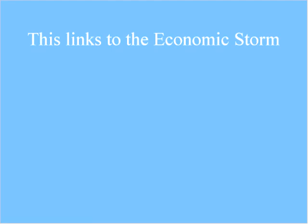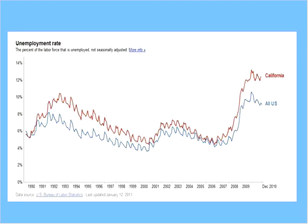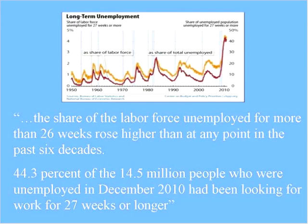I want to talk about the economic storm we are facing. This graph from the U.S. Bureau of Labor Statistics shows the blue line is unemployment. The spike we're in right now is the highest since the Great Depression — California is a good 2 percentage points higher than the rest of the country. The share of the labor force unemployed for more than 26 weeks is also the highest since the Great Depression.